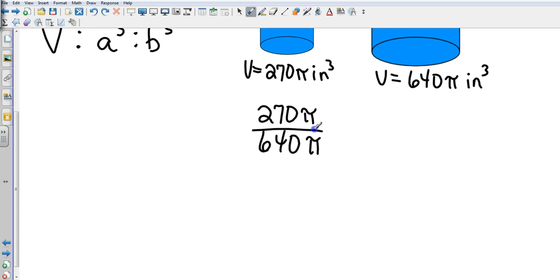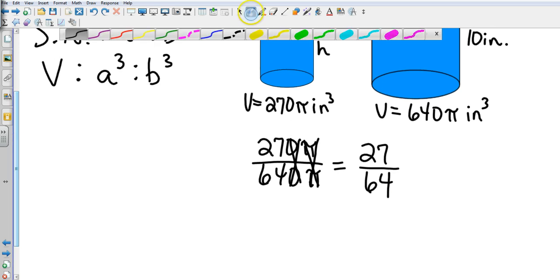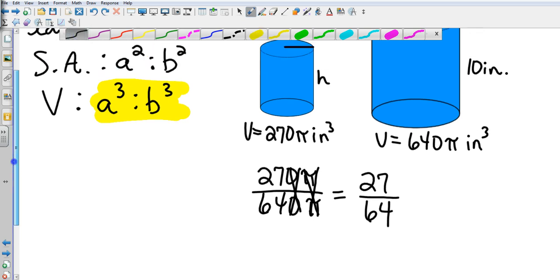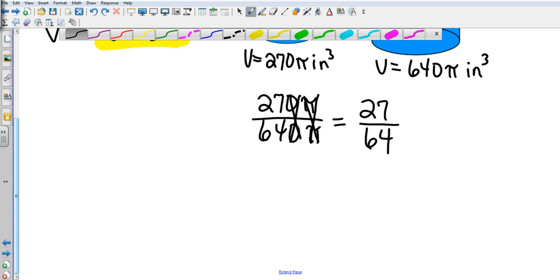So the πs are going to cancel. We'll go ahead and cancel out the zeros just for a simple reduction. Now we know that volume is a³ to b³, so can we write 27 and 64 as cubic units? We can: 27 is 3³ and 64 is 4³.